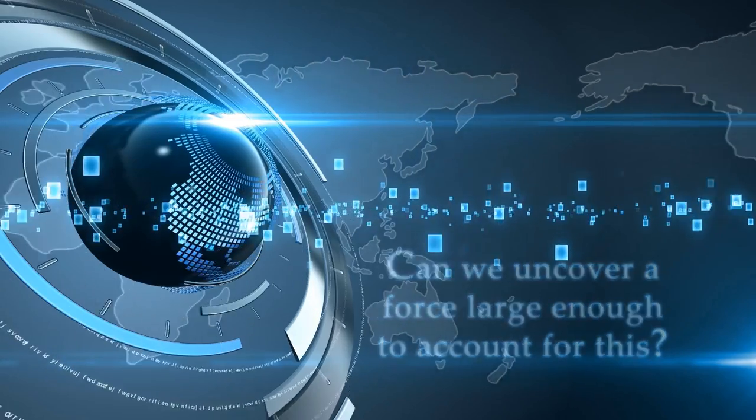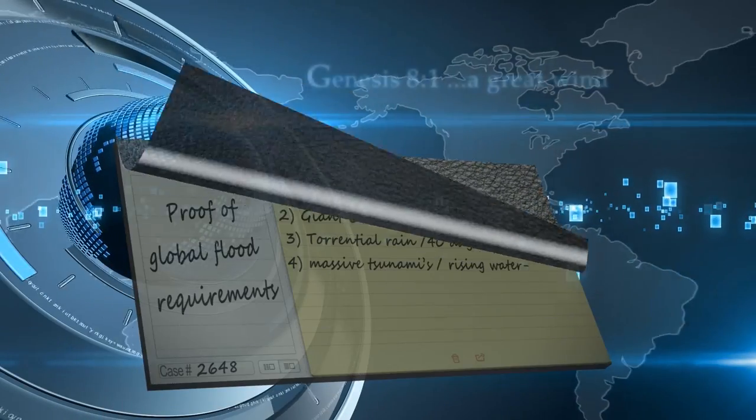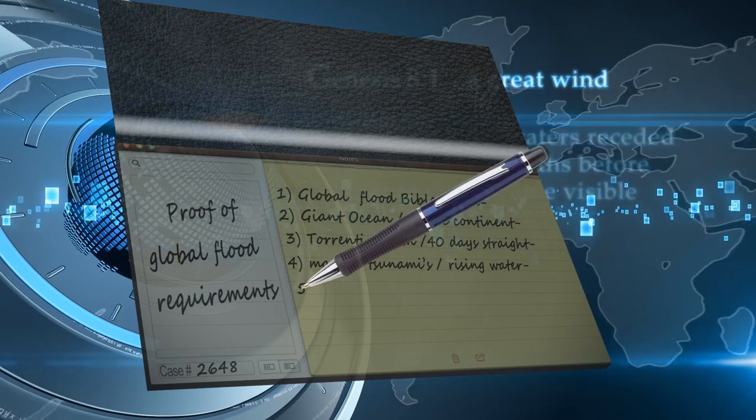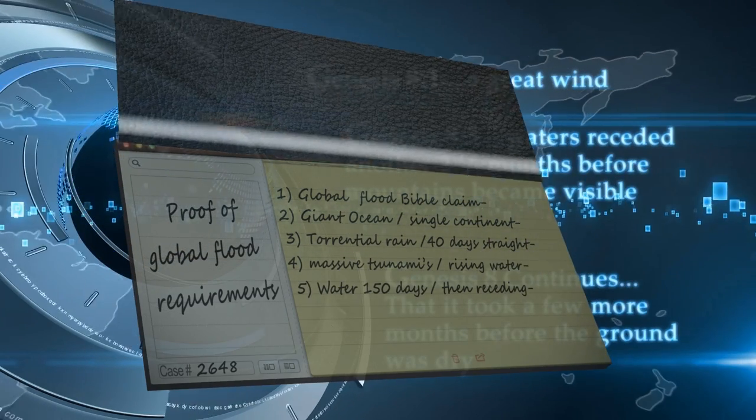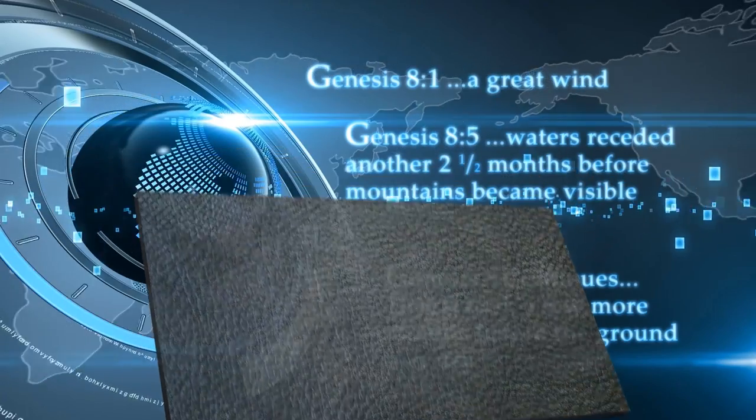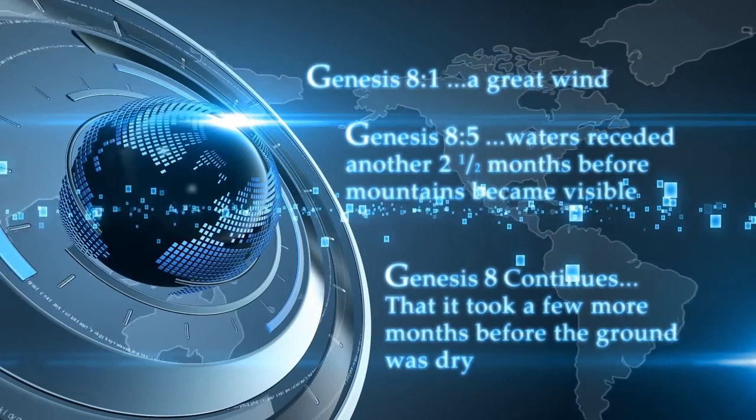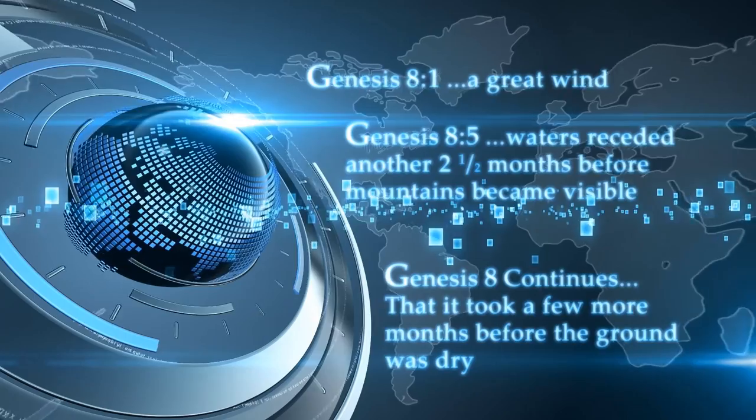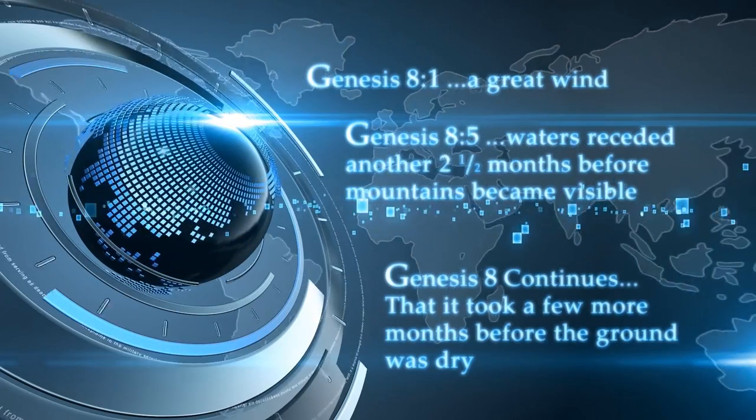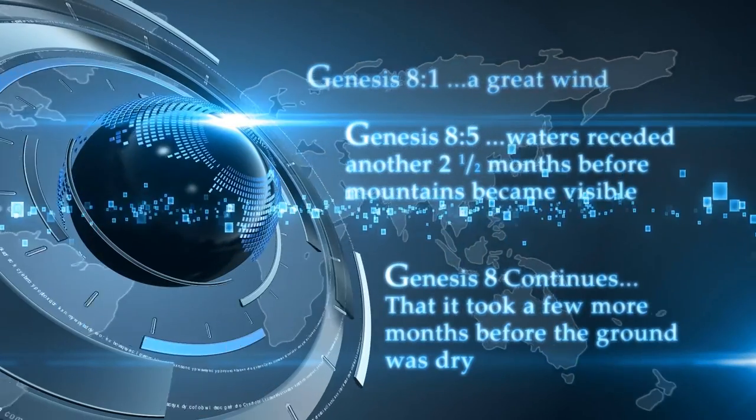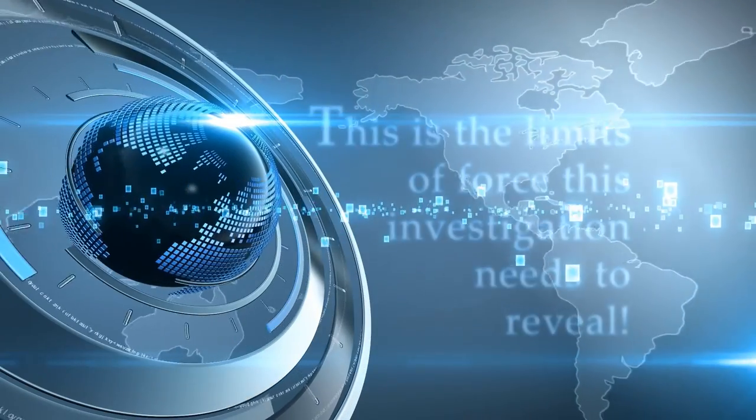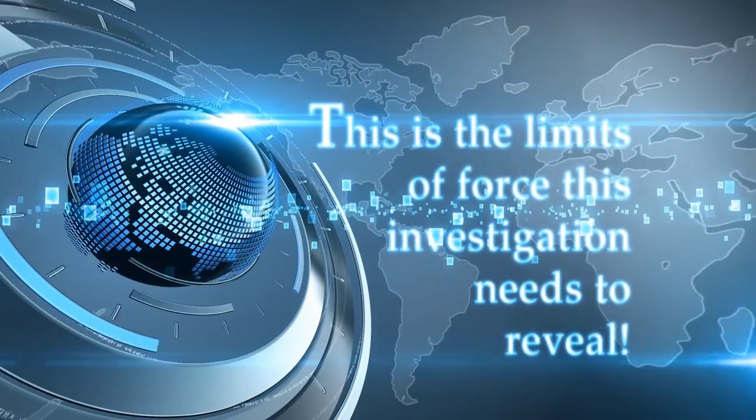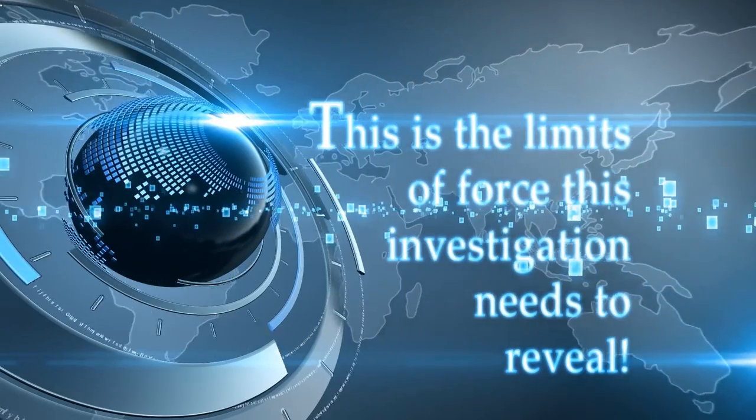Genesis 8:1 says a great wind went over the Earth and then the waters began receding. And 8:5 states that waters receded another two and a half months before the mountain tops became visible. And chapter 8 continues that it was yet another few more months before the surface of ground was dry. And the whole ordeal took just over a year from start to finish. This declares the turn of events and the limits of force that this investigation would need to reveal in order to maintain the integrity as genuine fact.